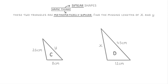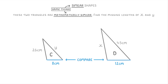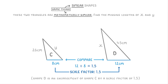Just like before, the first thing we want to do is find the scale factor between the two shapes. Because we're given the bottom lengths of these two triangles, we should compare the 8 centimeter side and the 12 centimeter side to figure out how many times bigger the 12 centimeter one is. We do 12 divided by 8, which is 1.5, so our scale factor is 1.5. We could say that shape D is an enlargement of shape C by a scale factor of 1.5.